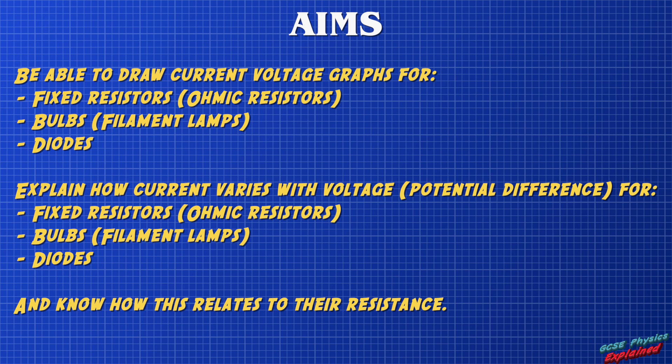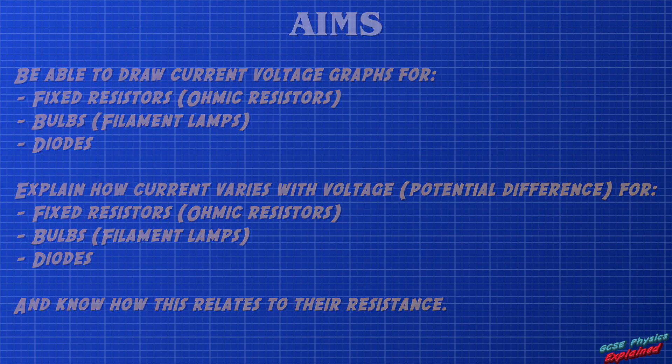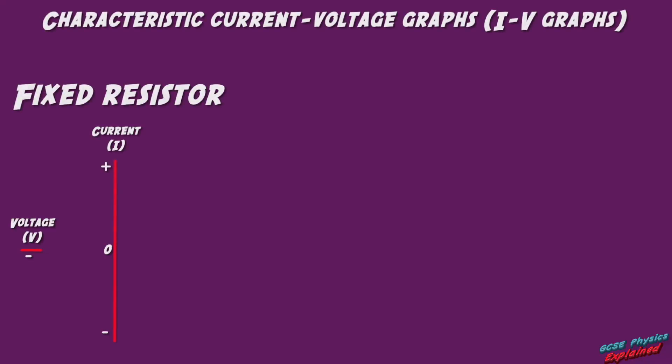You'll also be able to explain how current varies with voltage for fixed resistors, bulbs, and diodes, and know how this relates to their resistance. Basically you need to memorize three current voltage graphs.